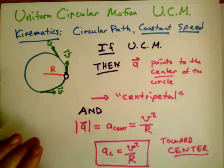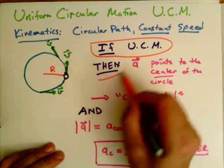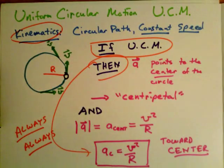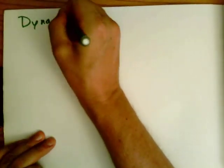We haven't explained, we're explaining how it moves. Every time I have UCM, I know immediately, always, that A sub C is equal to V squared over R.